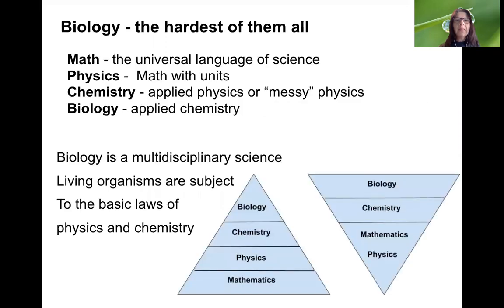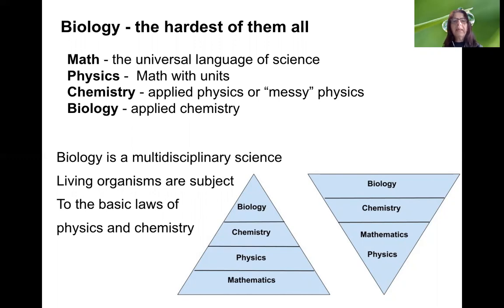Biology is the hardest science of all. The joke goes that while math is the universal language of science, physics really is math with units. Chemistry is stinky or messy physics and biology is applied chemistry. What this joke really means is that biology is a multidisciplinary science because living organisms are subject to the basic laws of physics and chemistry.